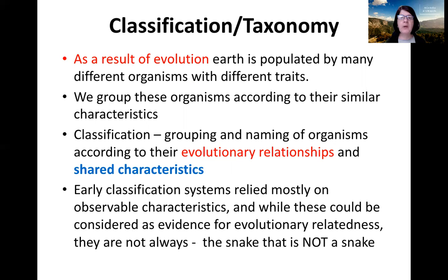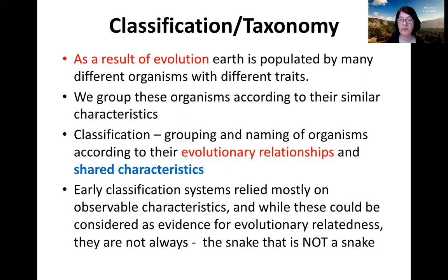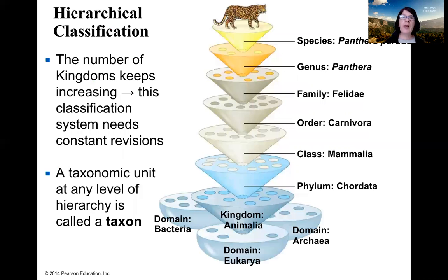Classifications have changed over the years. Basically, classification relies on grouping and naming of organisms according to their evolutionary relationships and shared characteristics. Shared characteristics are evidence of evolutionary relationship, but not always. Early classification systems relied mostly on observable characteristics, and while these could be evidence for evolutionary relatedness, they're not always — remember the snake that is not a snake.